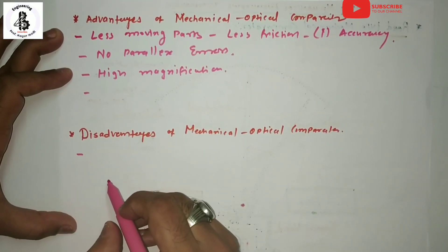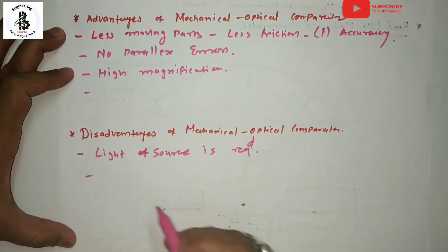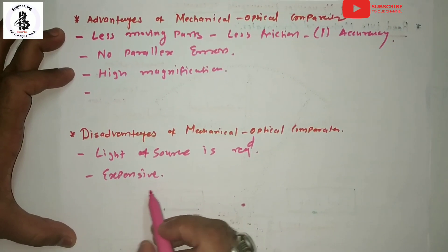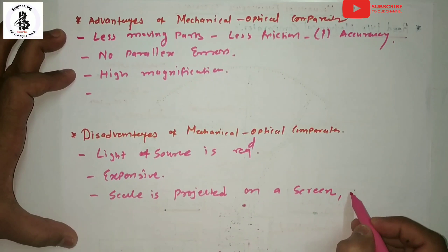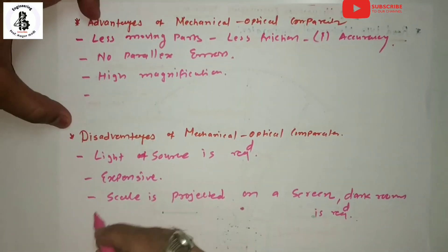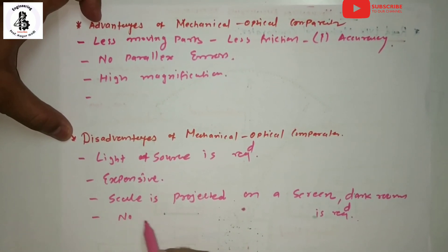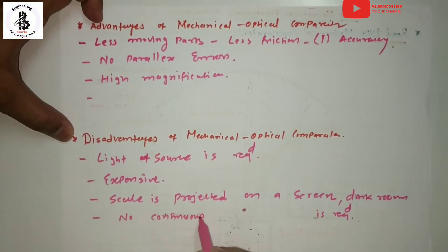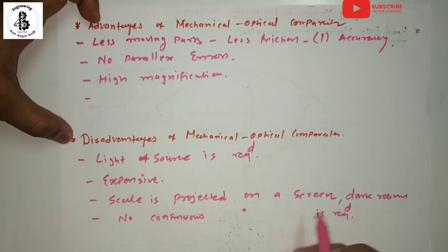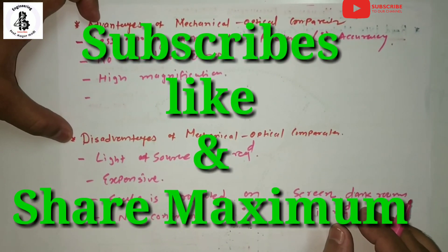Now the disadvantages: first, a light source is required. Second, it is expensive. Third, the scale is projected onto a screen and a darkroom is required. Fourth, the instrument is inconvenient for continuous use because it can be hazardous to the eyes of operators. These are all the points regarding mechanical optical comparators. If you like this video, please subscribe and share more mechanical engineering tutorials. Thank you very much.